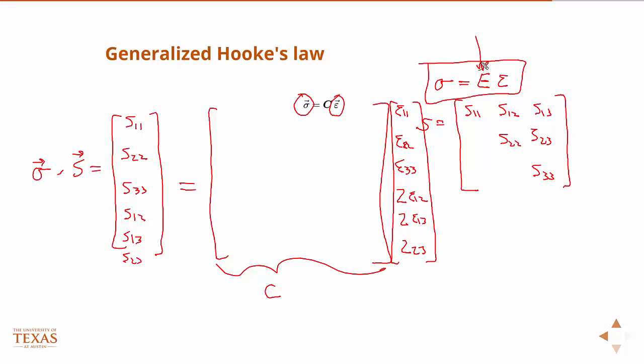Now thankfully, it turns out through, you can make some energy arguments and exploit the symmetry of the stress and strain tensor, and you can reduce it down to actually 21. So there's only, for a material that has no planes of symmetry whatsoever, there's 21 constants in that C matrix that are unique.